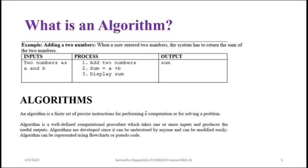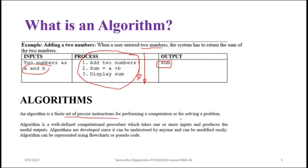Another example: we want to get the sum of two numbers. Inputs are the two numbers, output is the sum. The steps are: input the numbers, get the total, and display. These steps are the algorithm that converts inputs into the desired output. In general, an algorithm is a set of precise instructions that must be completed to solve a problem or get the desired output. The order or sequence is very important - we have to follow the steps in the given order.